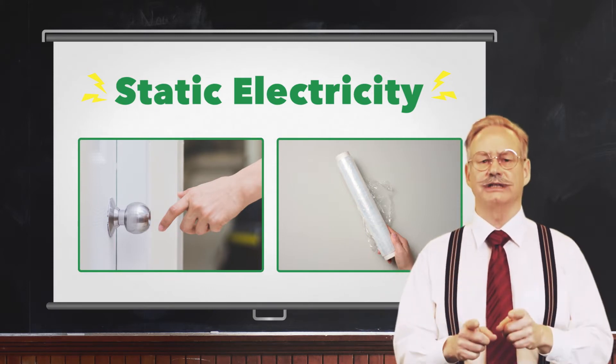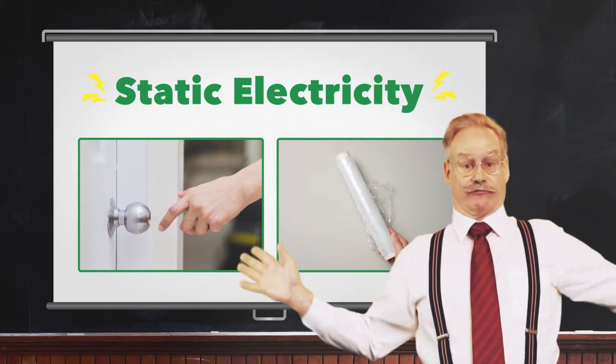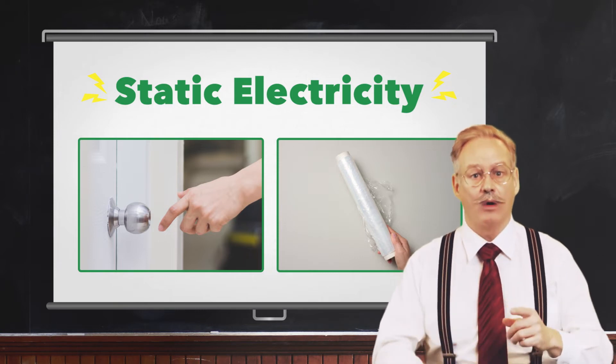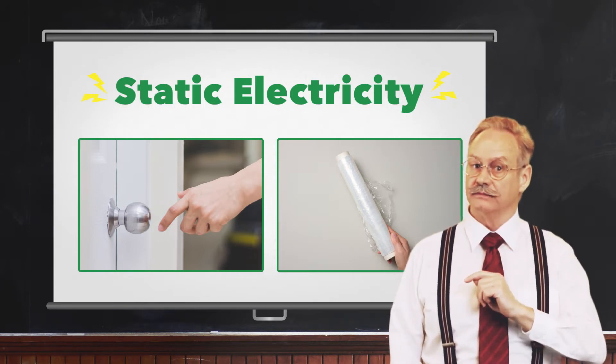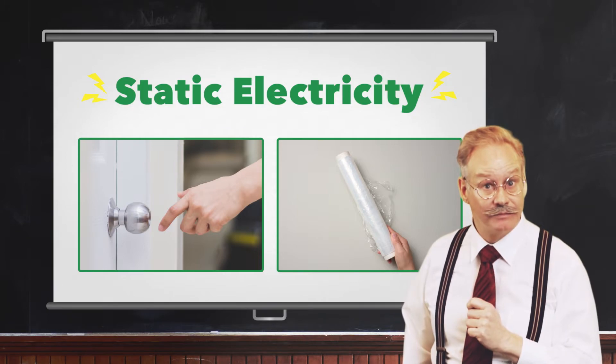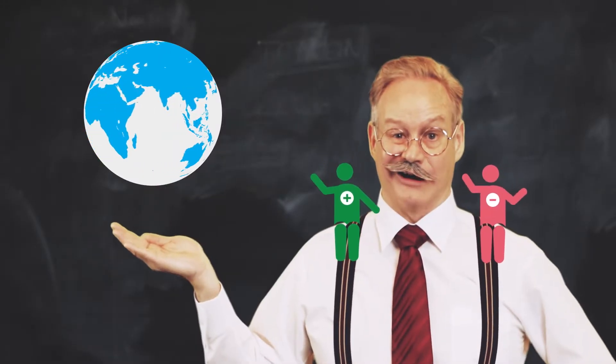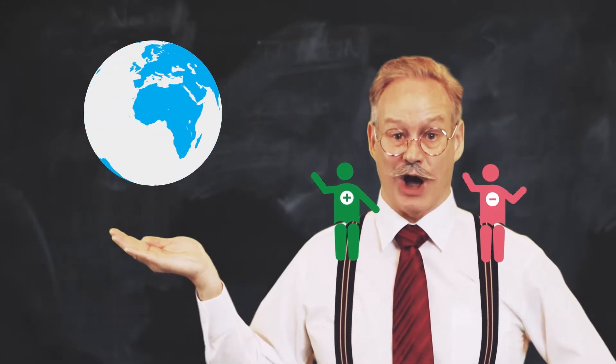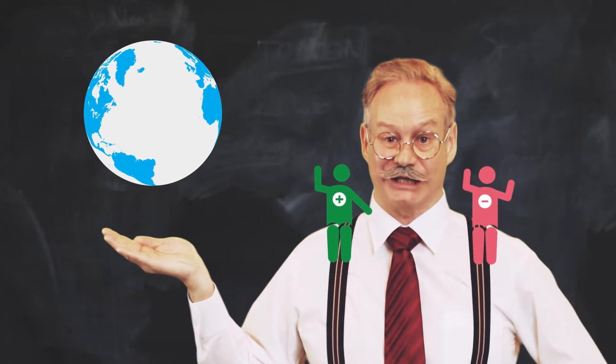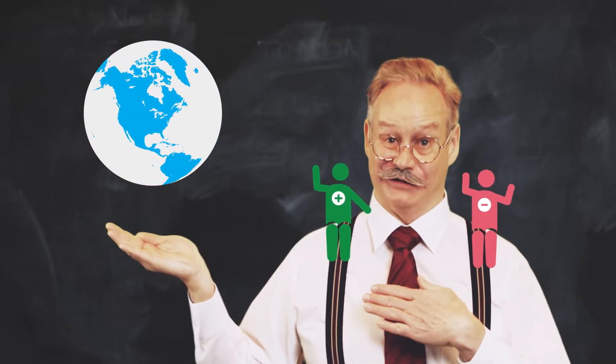Static electricity is generated everywhere, even though we might not notice. Do you know how? Everything on Earth is always either positively or negatively charged, even us humans.